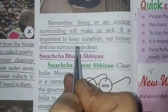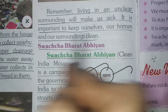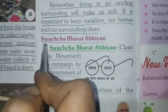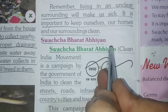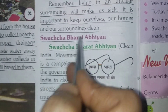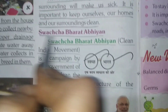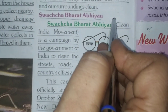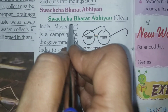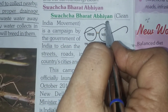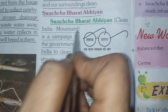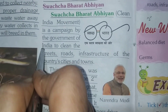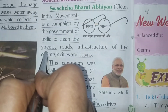It is important to keep ourselves, our homes and our surroundings clean. Swachh Bharat Abhiyan — in short form S.B.A. — is a Clean India Movement, a campaign by the government of India to clean the streets, roads and infrastructure of the country.